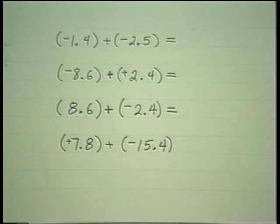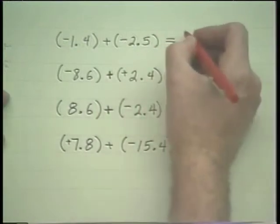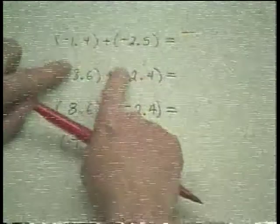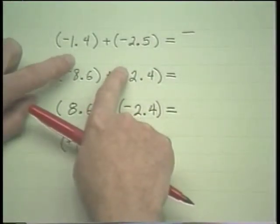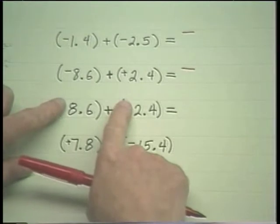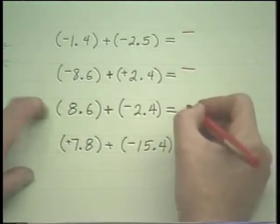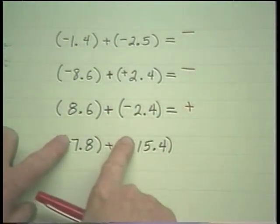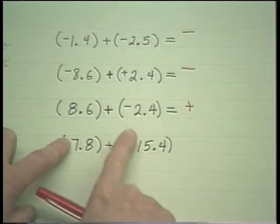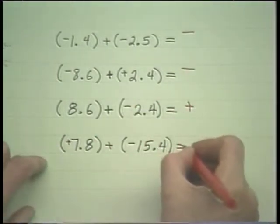Now a whole potful of mixed numbers. Let's see if we can determine the signs of these before we even add. If you're adding two negatives, the answer will be negative. If you're adding unlike signs, it may be negative or positive, so you ask which of these two has the larger absolute value and give it its sign. Again, if you're adding unlike signs, ask which is the larger absolute value — give it its sign, which is implied to be positive. Adding unlike signs, give it the sign of the larger absolute value — in this case, that is negative.